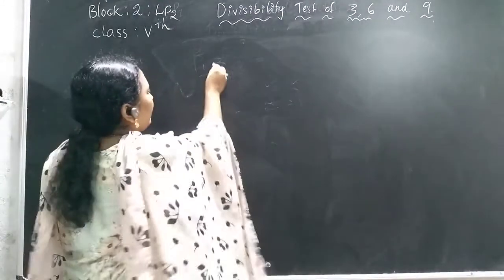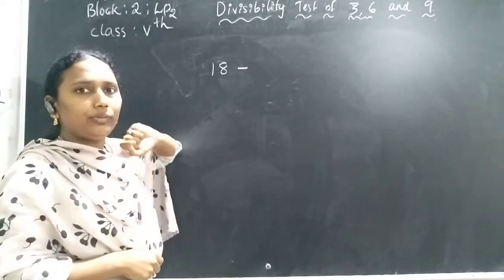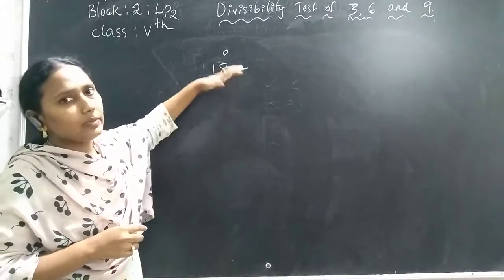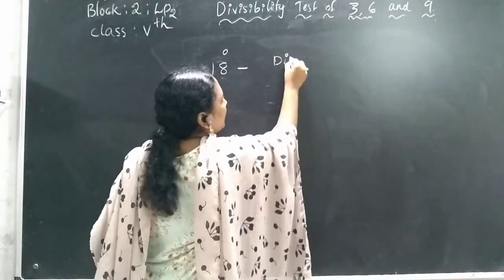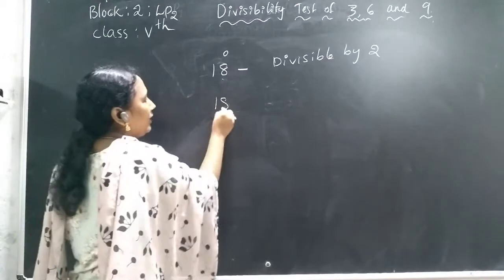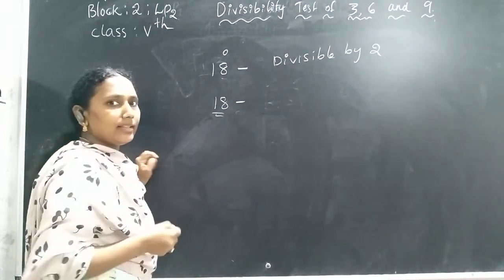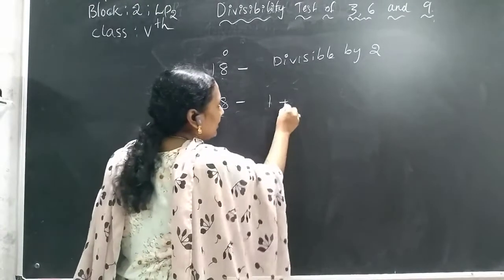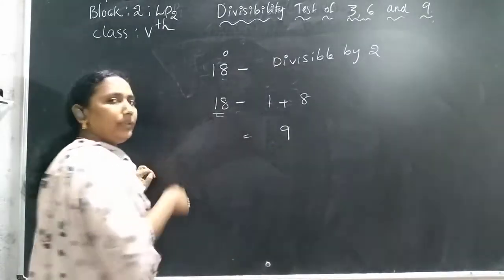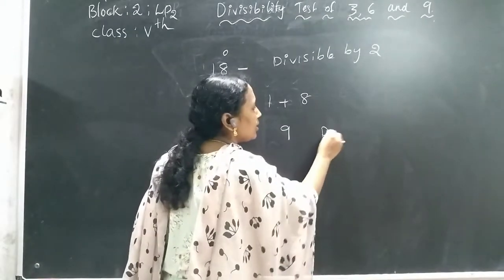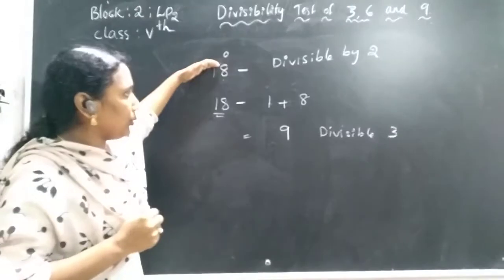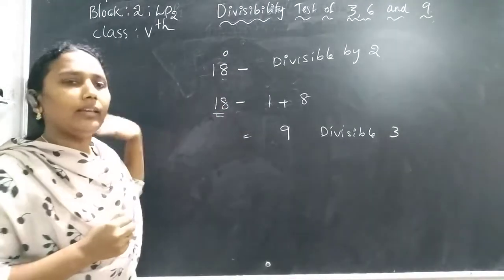Let's see an example. Take 18. Is 18 divisible by 2? Yes — the ones place has an even number. So 18 is divisible by 2. Now check divisibility by 3: add 1 plus 8, which equals 9. Is 9 in the 3 times table? Yes — 3 times 3 is 9. So 18 is also divisible by 3. Since it is divisible by both 2 and 3, 18 is divisible by 6.